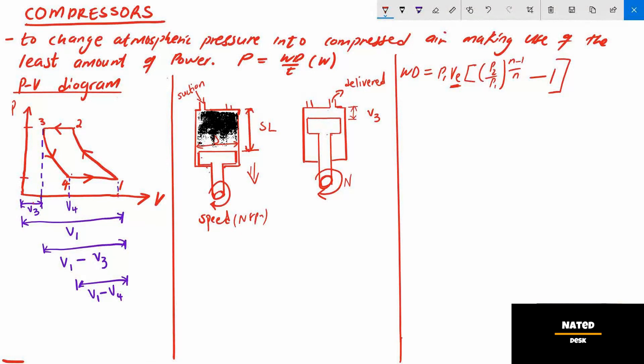After filling the cylinder, the piston then begins to move upwards. Then the air is polytropically compressed according to the law PV exponent n equal constant c.